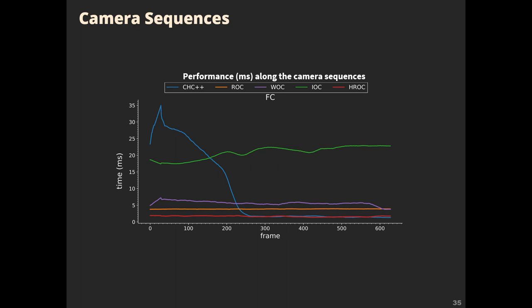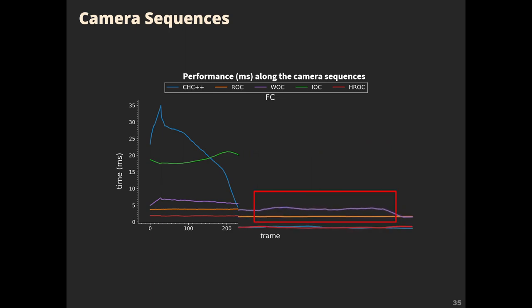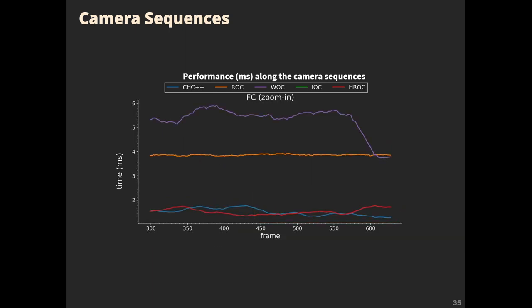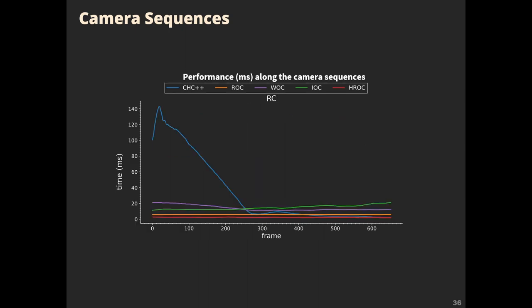This shows timing variations along the camera sequence. In the medium-scale scene, except for CHC++, methods are insensitive to camera movements. CHC++ gradually improves over time and converges to the performance of ours as objects become more occluded in closer view. Except for ROC, performance slightly fluctuates without strong degradation. In the large-scale scene, the trend is similar to that of the medium-scale scene.